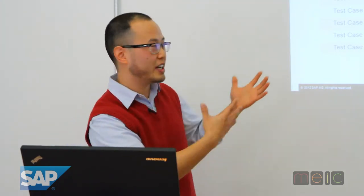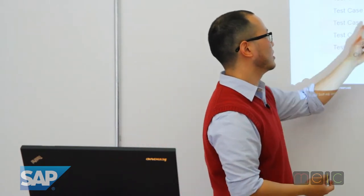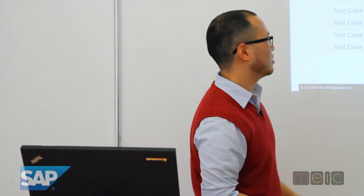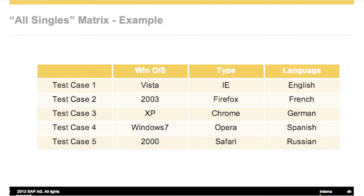So what you do is create this table and say, okay, test case one — I'll test Vista, IE, in English. Then as you come up to test case five, you're not testing every single combination, but you've at least tested. Looking at this list, coverage-wise, all the OSs have been covered, all the types have been covered, all the languages covered.